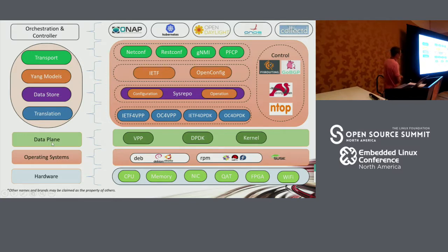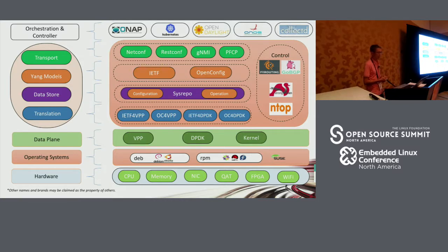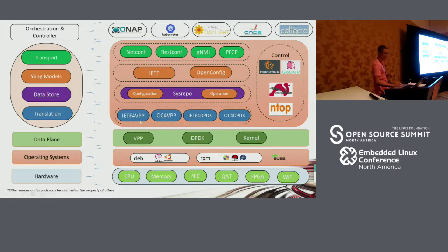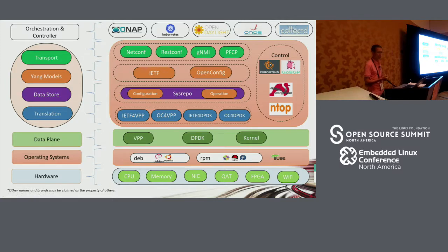For the data plane, currently there are Linux kernel data plane, the Linux networking stack, and also user space data plane projects such as DPDK and the VPP project. Here we have a translation layer, which translates the YANG models — the different YANG models such as the IETF YANG models and OpenConfig YANG models — to different data plane APIs. All the translation layers are supported in plugins. For example, if we want to translate the IETF YANG models to VPP APIs, we have the IETF-for-VPP plugin. Also for OpenConfig, it's the OpenConfig-for-VPP. And for DPDK, it's the same — IETF-to-DPDK and OpenConfig-to-DPDK.